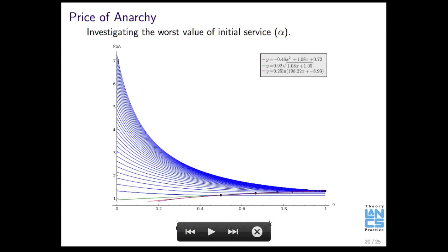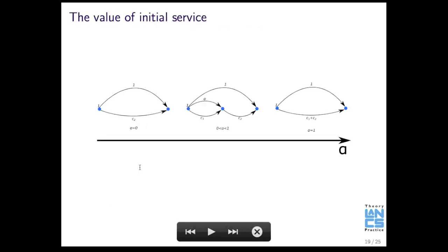And what we see for all of these is that as alpha increases to 1, the price of anarchy decreases. So to go back to this previous slide, it seems that this is the occasion that gives us the highest price of anarchy. In other words, where the shortcut is free, and that's the highest price of anarchy.